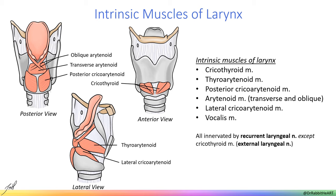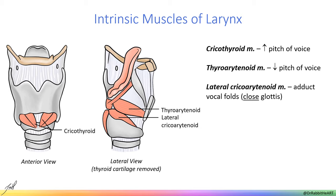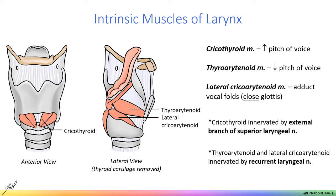The larynx is a dynamic structure with muscles acting on laryngeal cartilages to adjust the pitch of the voice or size of the airway. The cricothyroid muscle is on the anterior aspect of the larynx and increases tension on the vocal ligaments, resulting in increased pitch of the voice. Conversely, the thyroarytenoid muscle on the lateral side decreases pitch. The lateral cricoarytenoid muscle is also on the lateral aspect and functions to adduct the vocal folds, helping to close the airway. While cricothyroid is innervated by the external laryngeal nerve, the rest of the intrinsic laryngeal muscles are innervated by the recurrent laryngeal nerve.